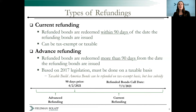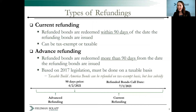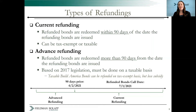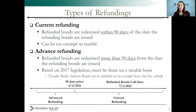Prior to 2017, an issuer could do one advance refunding on a tax-exempt basis. However, under the Tax Cuts and Jobs Act of 2017, advance refundings can only be done on a taxable basis, with some exceptions. For example, taxable Build America Bonds could be refunded on a tax-exempt basis, yet the issuer will lose their federal subsidy payments. To illustrate: if the outstanding bonds are callable beginning July 1st, and the new refunding bonds are issued before April 2nd, this is an advance refunding. If they are issued after April 2nd, this is a current refunding.